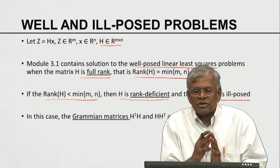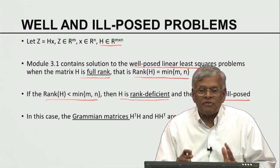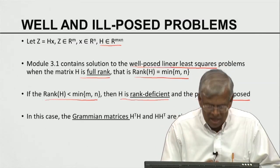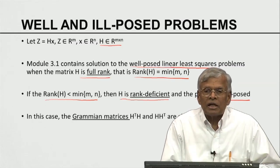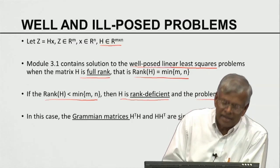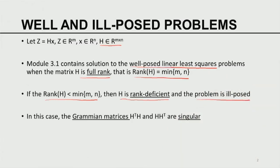Well-posed versus ill-posed is largely determined by the properties of the matrix H. Z equal to H of X defines the static model; the properties of the model are defined by the matrix H. We considered one aspect — now we are considering another aspect of the properties of the model: full rank versus rank deficient. When the H matrix is rank deficient, the Gramian matrices H transpose H and H H transpose are symmetric but they are not positive definite — they are singular.